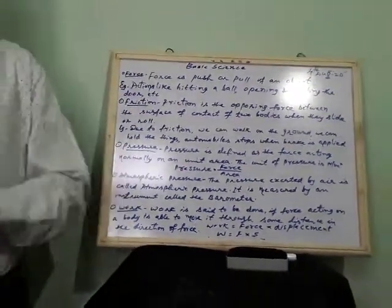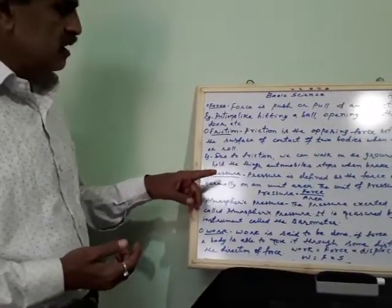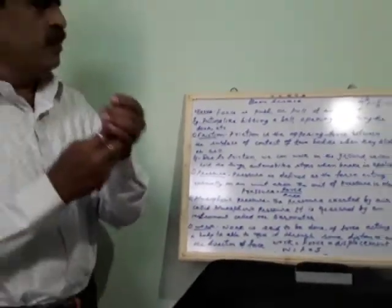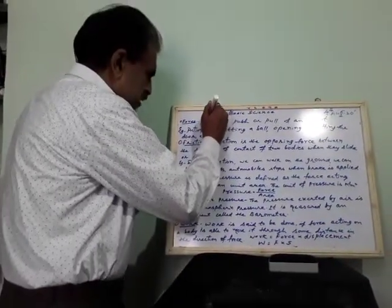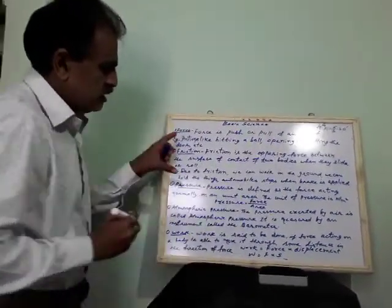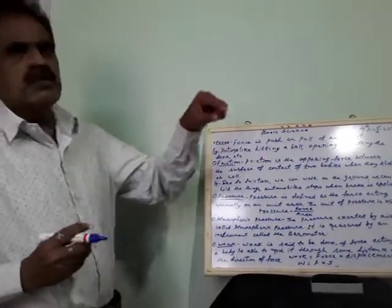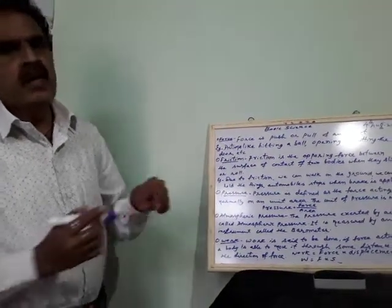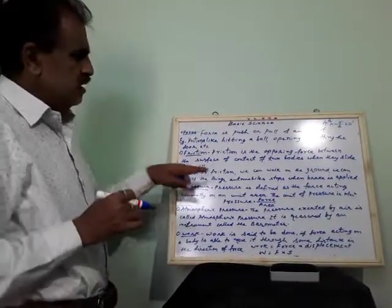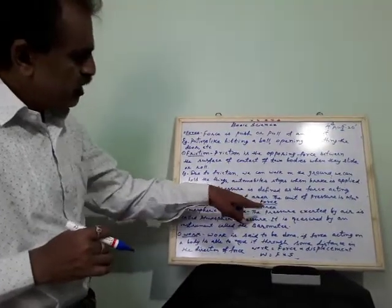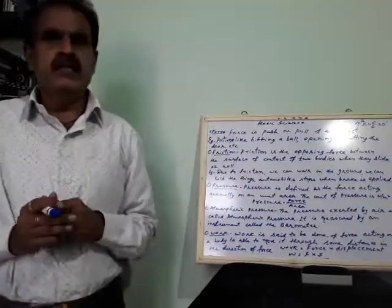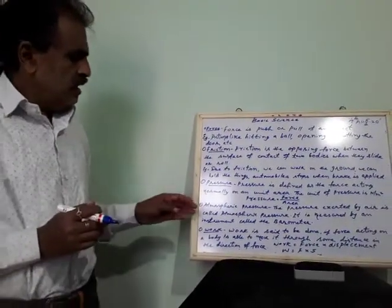After friction, we come to pressure. Pressure is defined as a force acting on a particular area. For example, when I take a pen and write here, I am applying pressure. So force applied on a particular area is called pressure. Pressure is defined as force per unit area. The unit of pressure is newton per square metre.